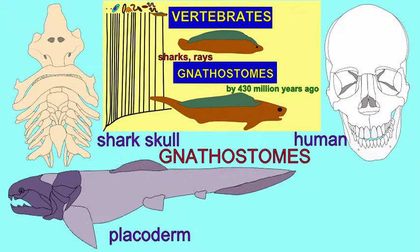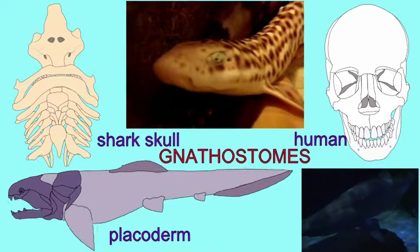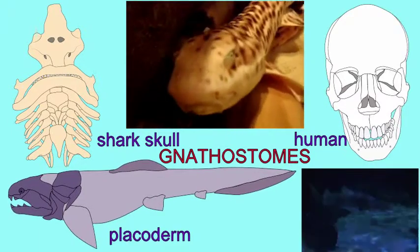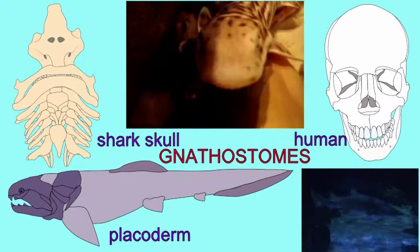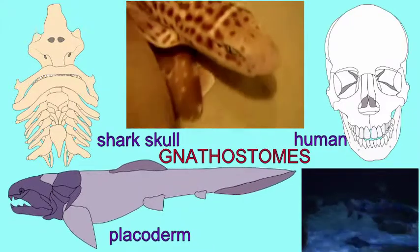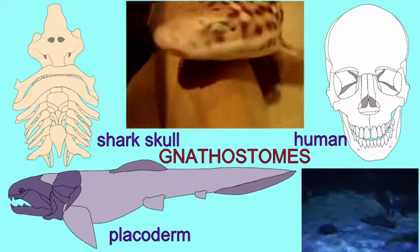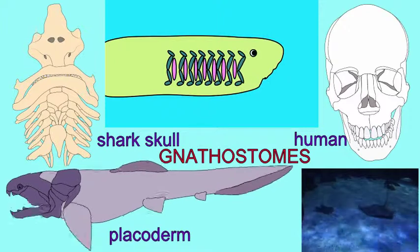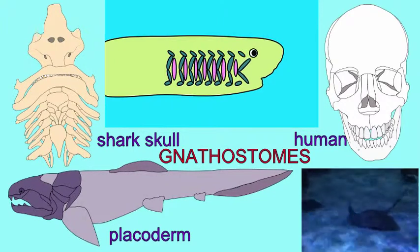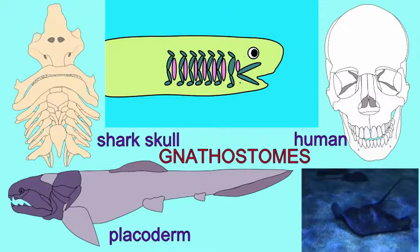These gnathostomes, which have given rise to vertebrates as diverse as sharks and humans alive today, are known as the jawed vertebrates because one of the greatest changes in this lineage was the modification of the gill arches which were already there.